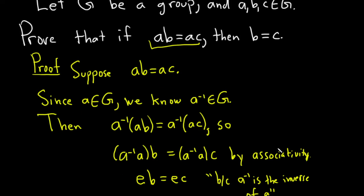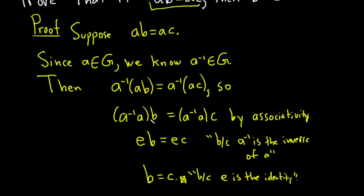Then we can invoke the power of associativity to rearrange the parentheses. And then because a inverse is the inverse of a, when you multiply them together, you get the identity.